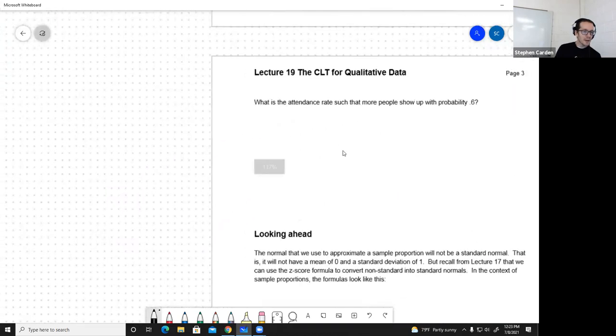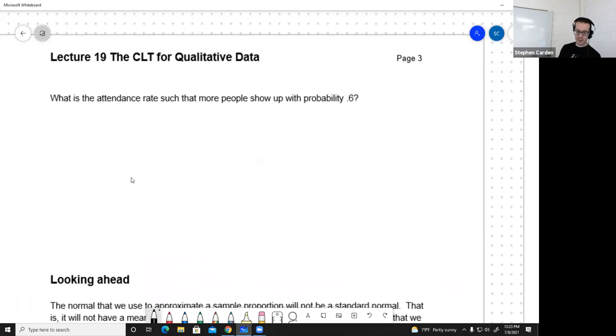Second part of the example. What's the attendance rate such that more people show up with probability 0.6? This time it's giving me a probability and I'm looking for an attendance rate. Sounds inverted. Sounds like an inverse problem. So before I go any further, I'm going to sketch over on the side. These sample proportions can be modeled with a normal that is centered at 0.85. And then we're looking for an attendance rate. We don't know what it is. As always, I'm using C to represent that. But what I do know, the probability that more people show up is 0.6. The area under the curve to the right. Is 0.6. I don't want to shade that one. I need to shade the area to the left. So 1 minus 0.6, 0.4. Yeah, that's the area to the left.